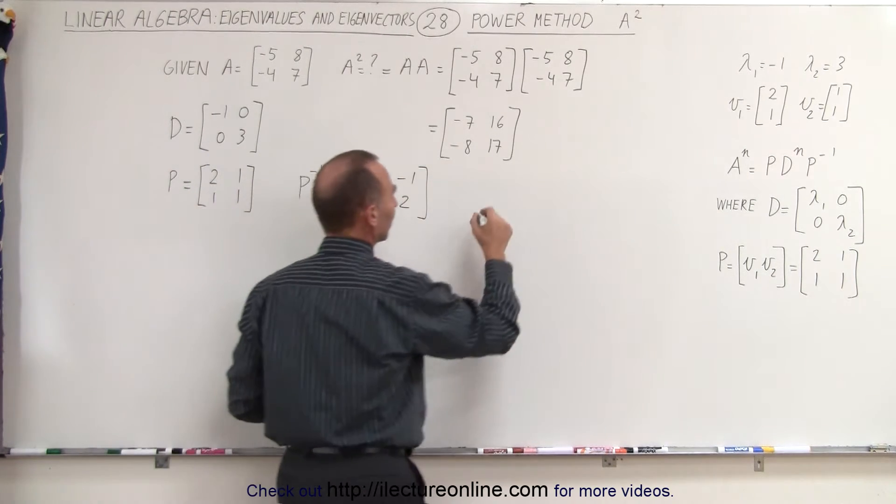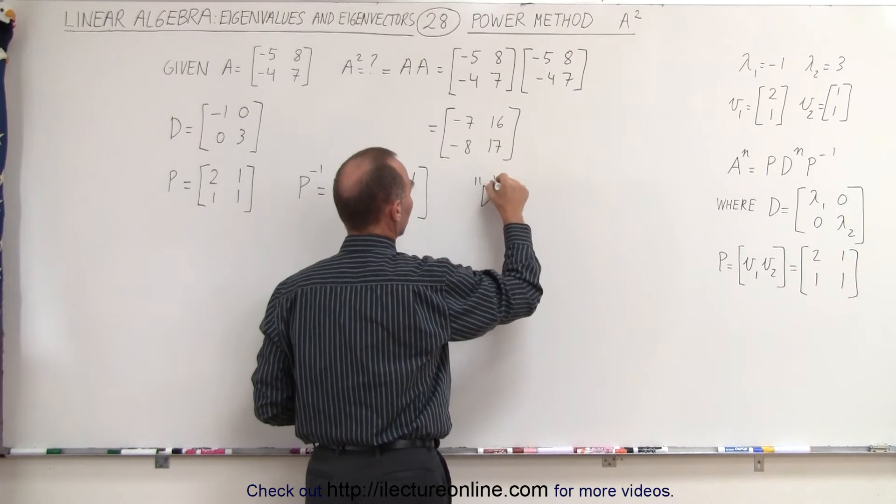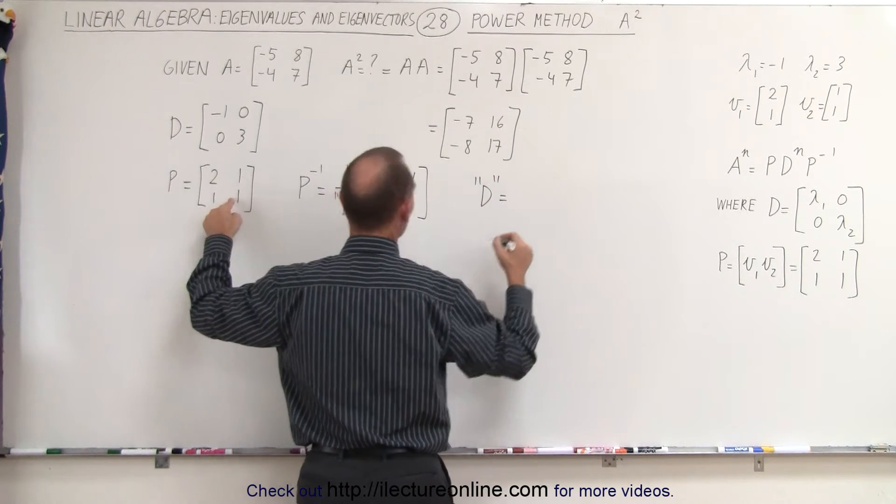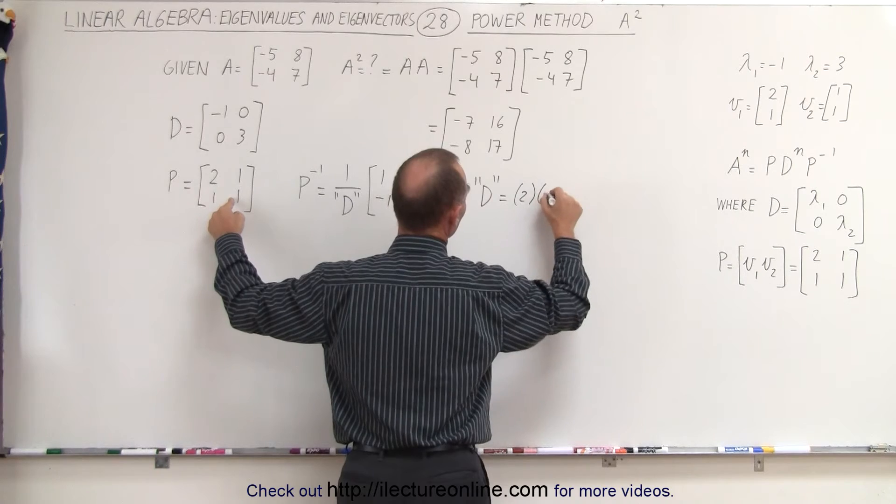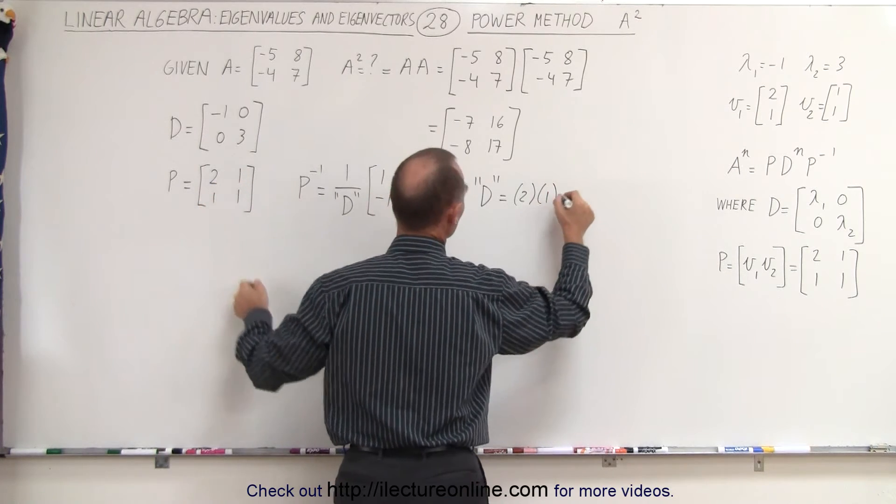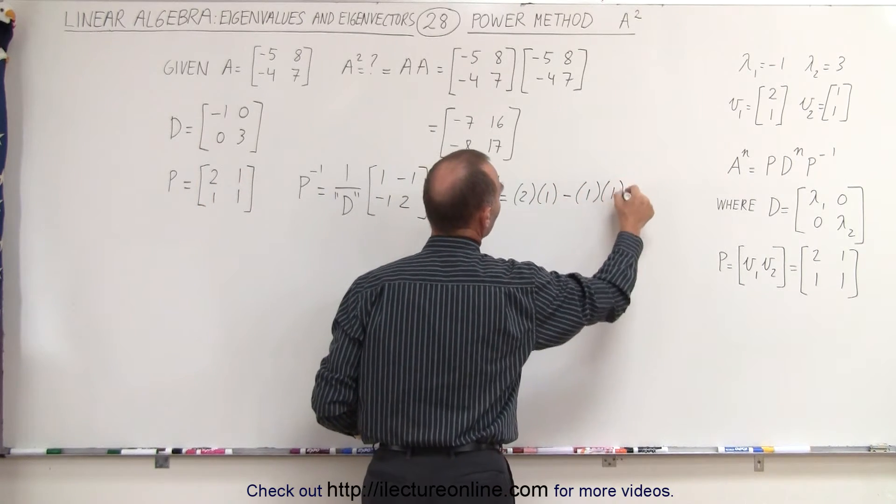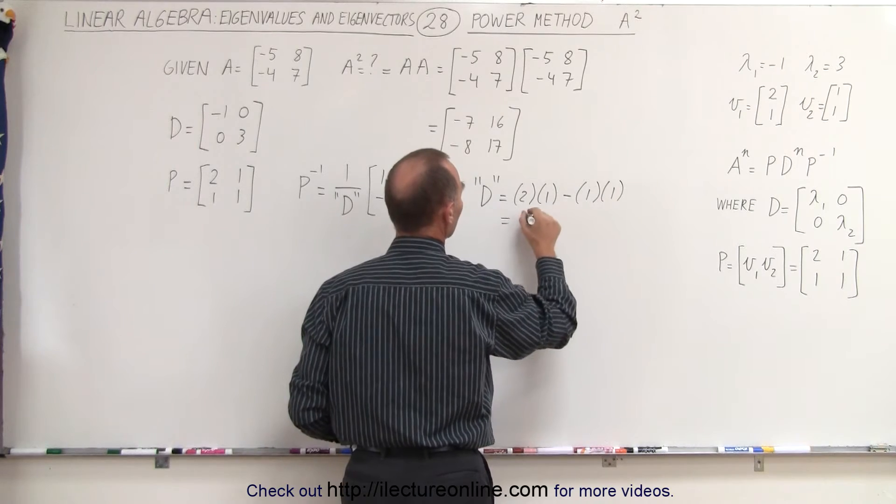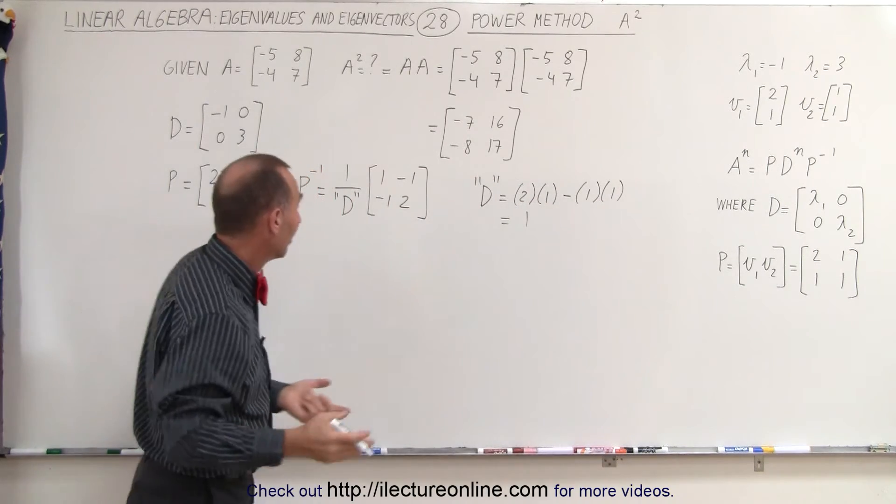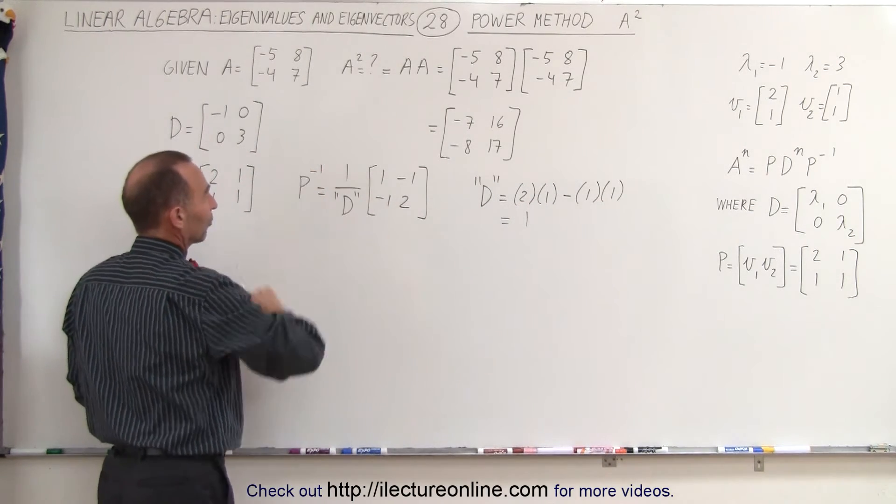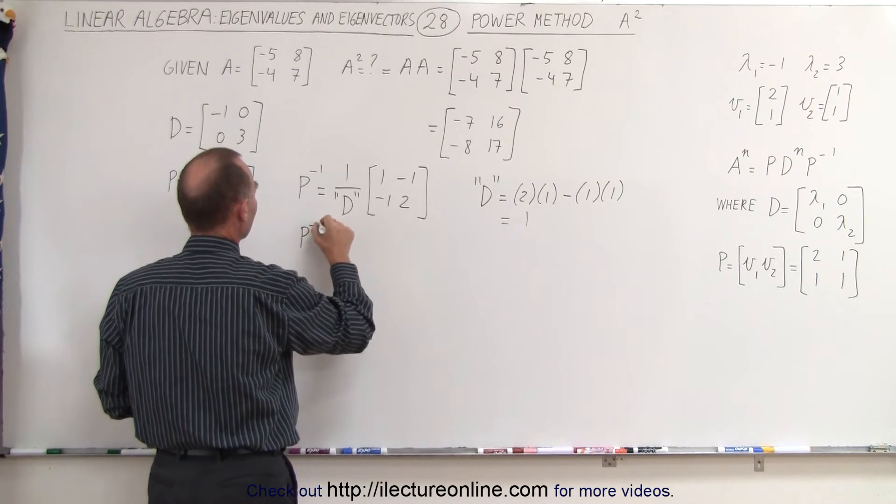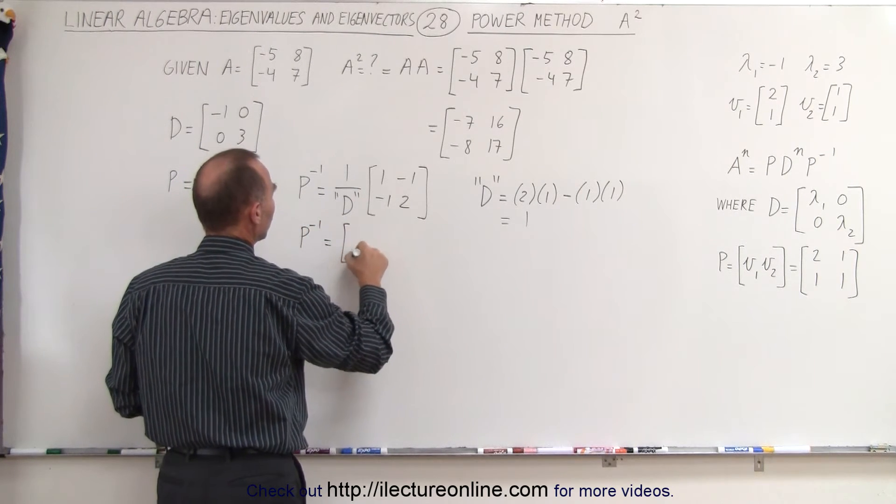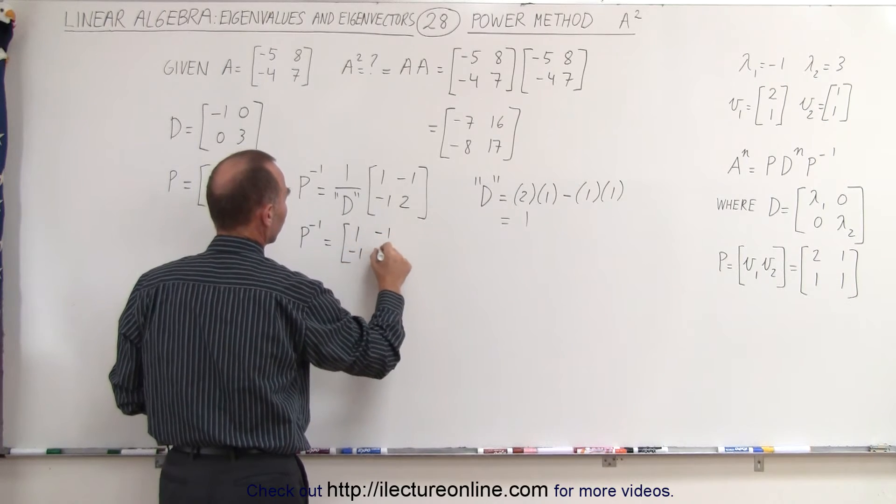And of course, we can say that the determinant of that matrix is equal to the product of those two, which is 2 times 1, minus the product of those two, 1 times 1, which in this case is 2 minus 1, or simply 1, which makes it easy. 1 divided by 1 is 1, so we don't have to worry about it. So we can simply say that the inverse of the P matrix is equal to 1, negative 1, negative 1, and 2.